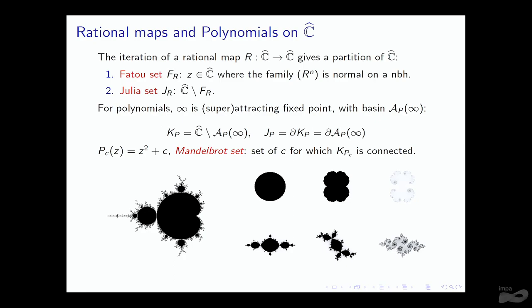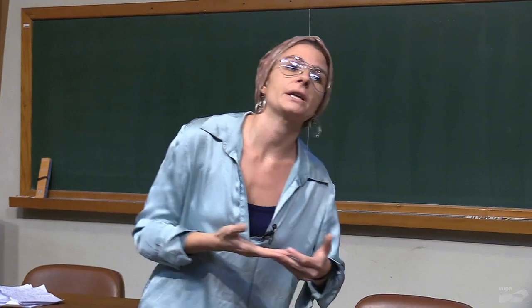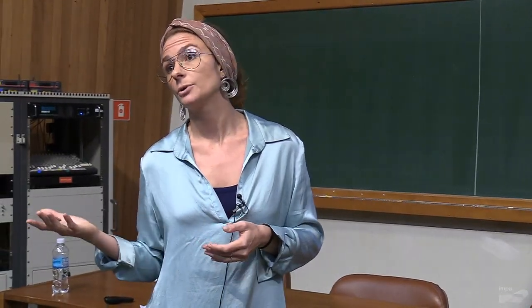The iteration of a rational map on the Riemann sphere gives a dynamically meaningful partition of the Riemann sphere into two complementary sets. One is the Fatou set, which is the set of points around which the family of iterates is normal or equivalently equicontinuous. And the Julia set, which is the complement where the dynamics is chaotic. The easiest rational maps are polynomials, and for any polynomial of degree greater or equal to two, infinity is a super-attracting fixed point.